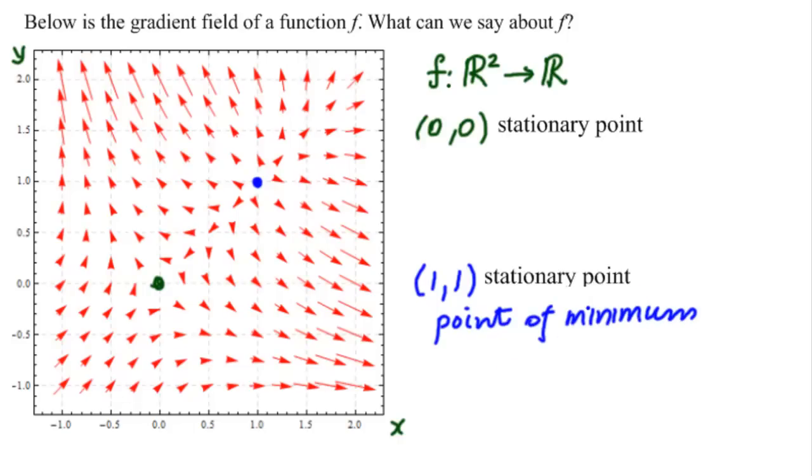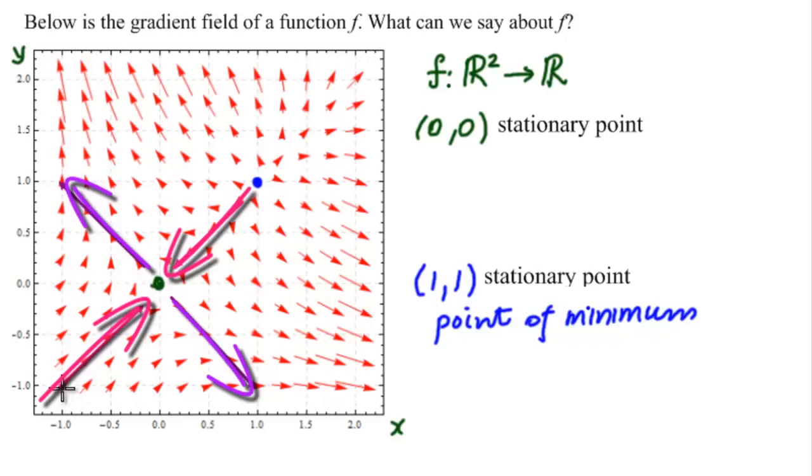Here, however, we have an interesting situation. We have vectors pointing out these. Those vectors are pointing away from that point. But these vectors here are pointing towards the point. This is the line y equal to x. So we're seeing that we're going to get a maximum along that point. But along the line y equal to minus x, we're going to get a minimum. So what can we say about this point? We can say that it is a saddle point.